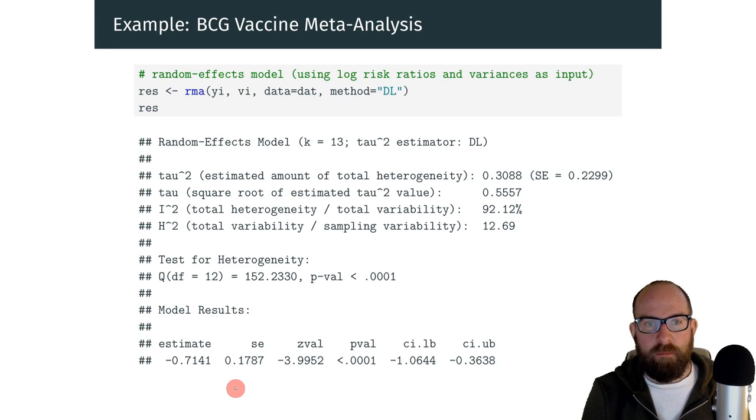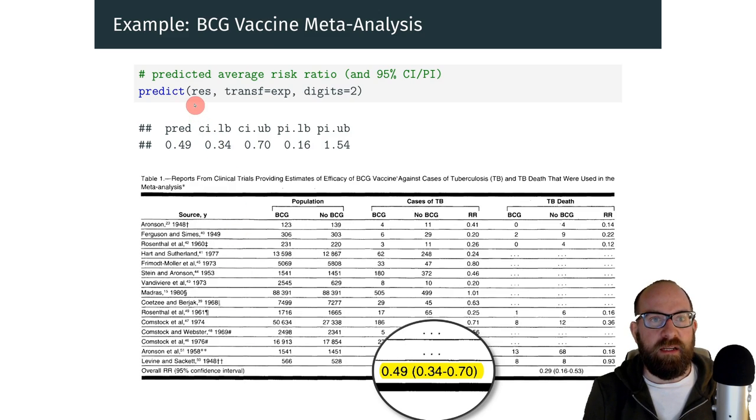These two variables we then pass on to the rma function to conduct our meta-analysis using a random effects model. So here are the results. Most importantly, at the end, we will back-transform the results to an estimated average risk ratio with a corresponding confidence interval. So based on this meta-analysis, we estimate that on average, vaccinated individuals have a 50% lower infection risk than non-vaccinated individuals. And we can compare these results with what is reported in the meta-analysis, and we see that this matches up exactly.